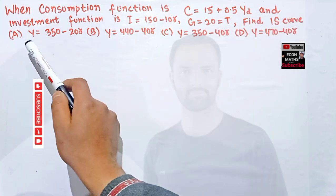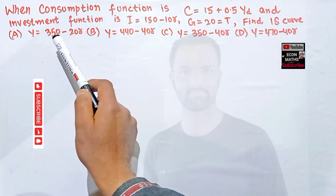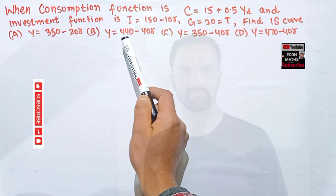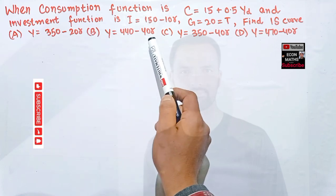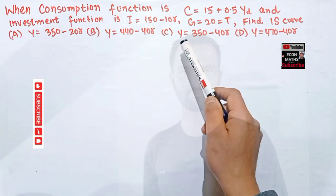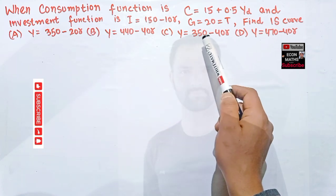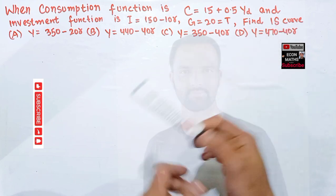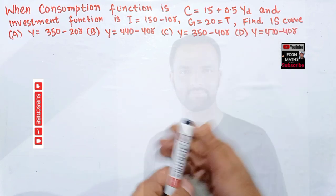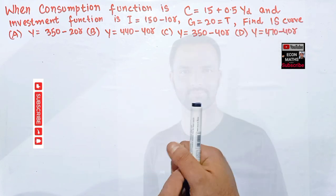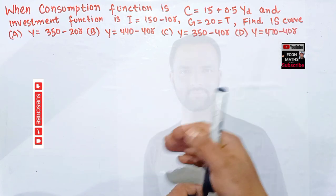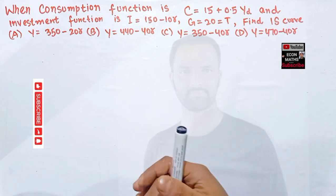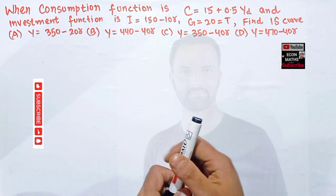The options are given as: Y = 350 - 20r, Y = 440 - 40r, Y = 350 - 40r, or Y = 470 - 40r, where r is the rate of interest. So we have to find the IS curve.